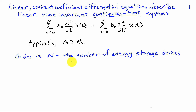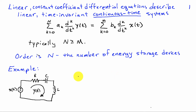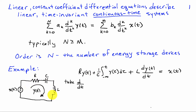The order N corresponds to the number of energy storage devices present in the system. As a simple electrical circuit example, we have a voltage source representing an input x(t) and the current around the circuit representing the output y(t). Summing the voltage drops around the loop, we obtain R times the current y(t) plus 1/C times the integral of the current plus L times the derivative of the current, equal to the voltage source x(t).